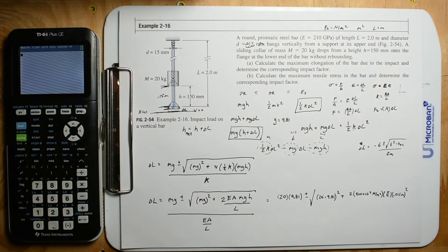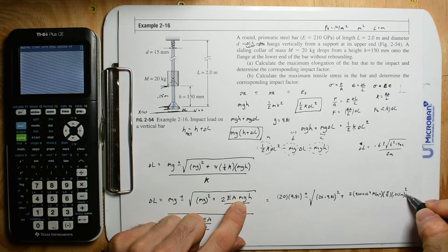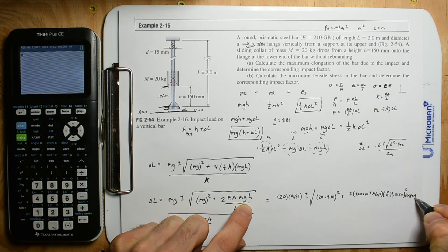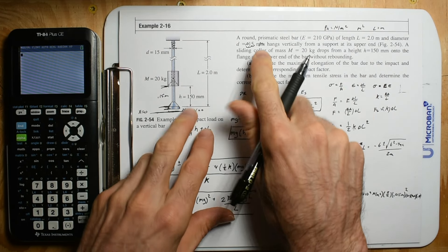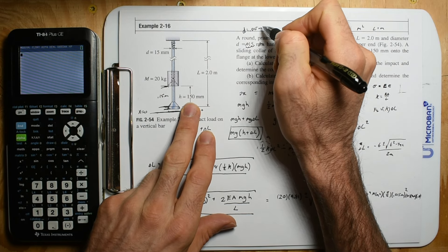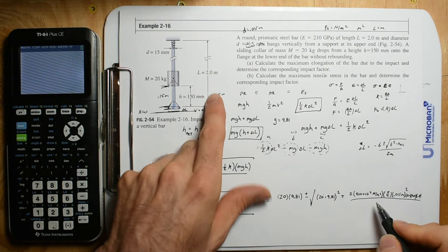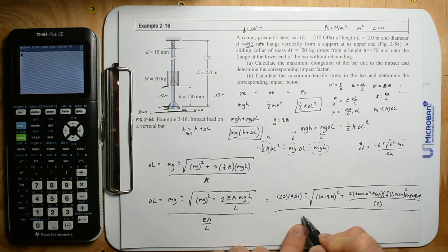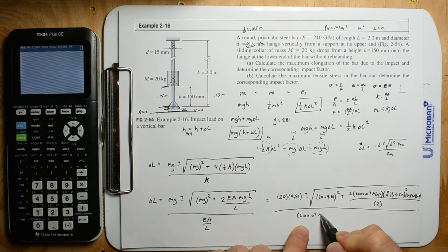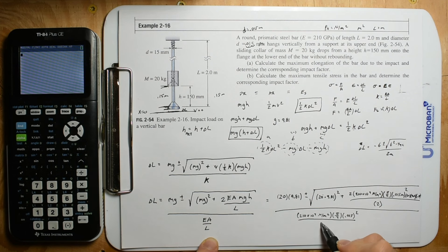Our height is 0.15 meters — don't get confused that our diameter is 0.015 meters which is 15 millimeters, while our height is 0.15 meters. We have a length of 2 meters. Now we're going to divide the whole thing by 210 times 10 to the 9 newtons per meter squared, times pi divided by 4 times 0.015 squared, divided by 2.